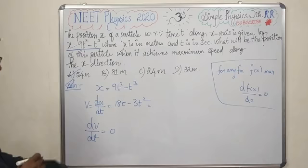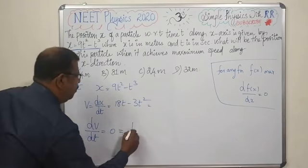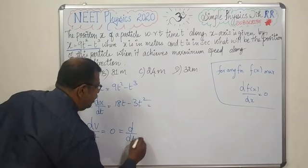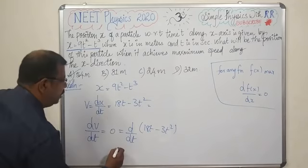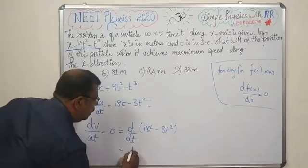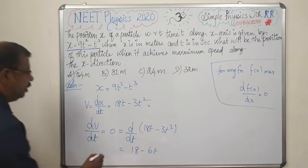dv by dt equals 0. d by dt of v: 18t minus 3t squared. If we differentiate, 18 minus 6t equals 0.